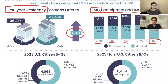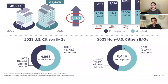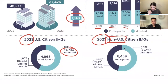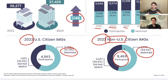Looking at US citizens versus non-US citizens, in 2023 there were 4,963 US IMG participants, of which 67.6% matched. For non-US IMGs — which is what we are primarily concerned with — there were 8,469 participants, and about 59.4% of them matched, meaning approximately 5,000 people. Comparing to previous years, this match rate is growing, which is a positive sign.